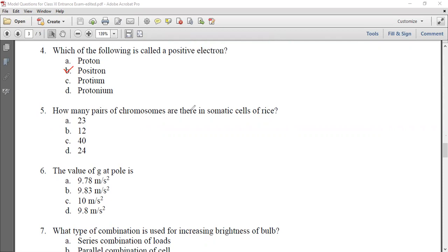This was the other question. How many pairs of chromosomes are there in somatic cells of rice? Somatic cells, which is a normal body cell, is a general cell. There is a number of chromosomes which are in pairs. There are 12 pairs of chromosomes in somatic cells of rice.